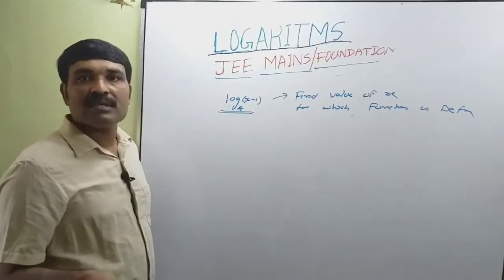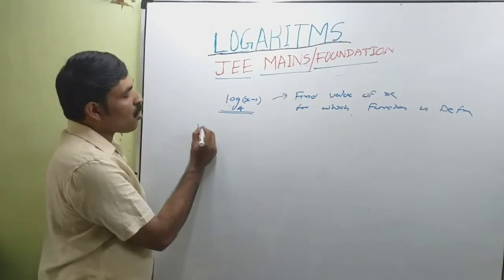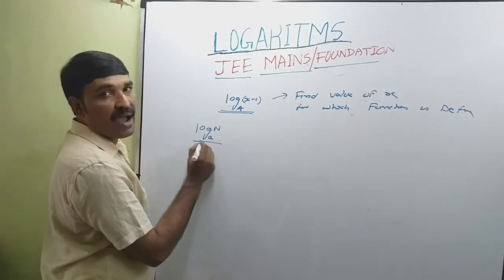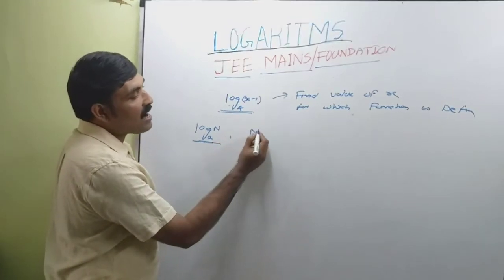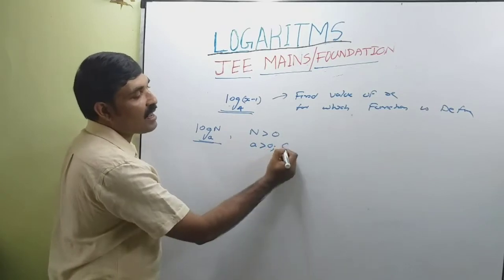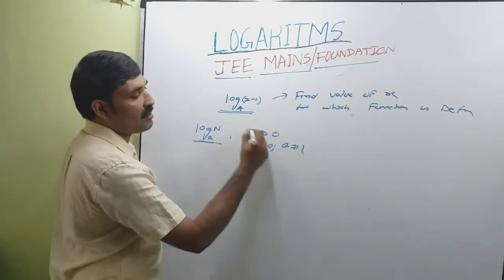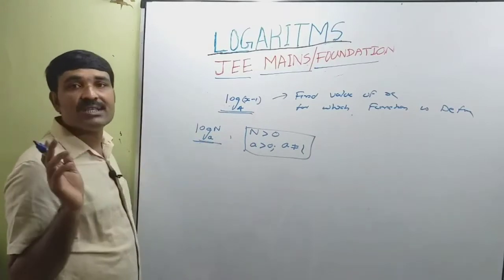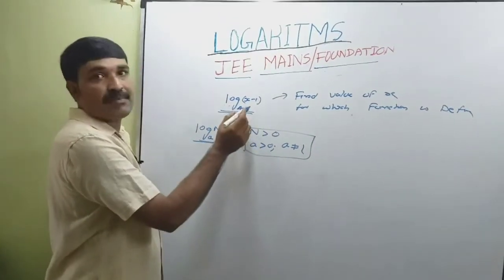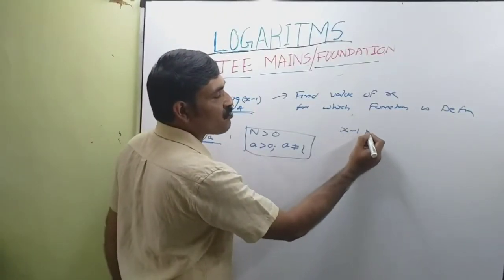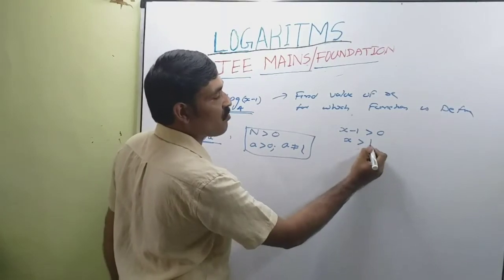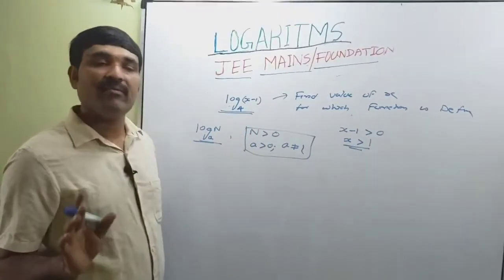Using the property of logarithm: log n to the base a is defined if n > 0, a > 0, and a ≠ 1. Applying this condition here, n is (x - 1), so x - 1 > 0, which gives x > 1.